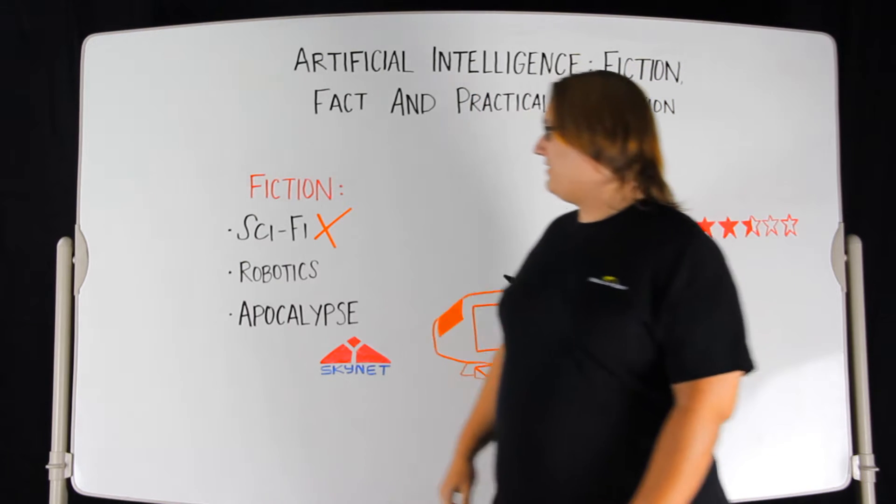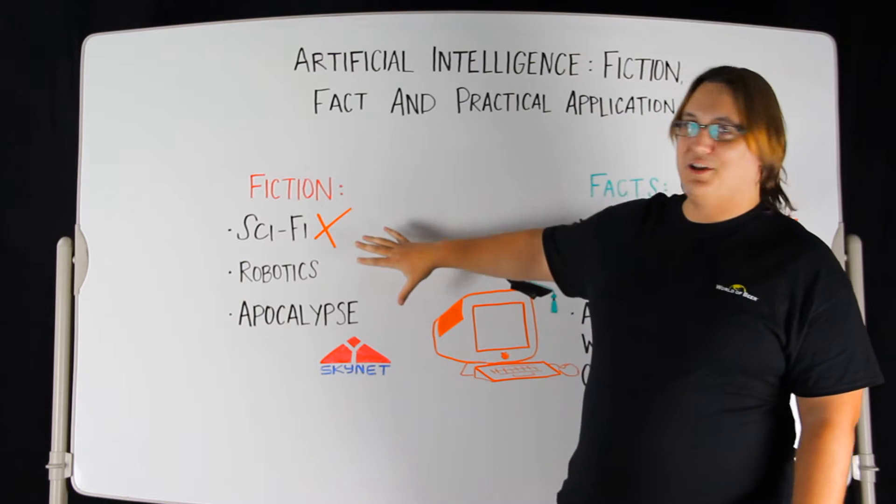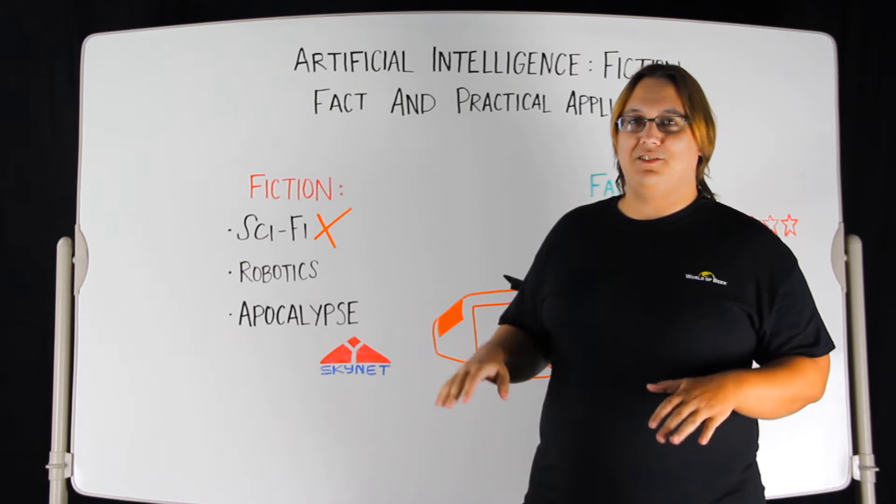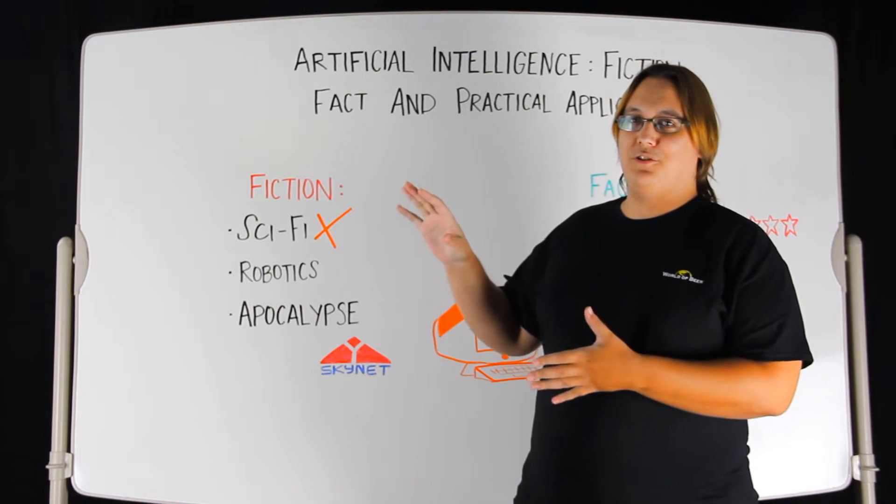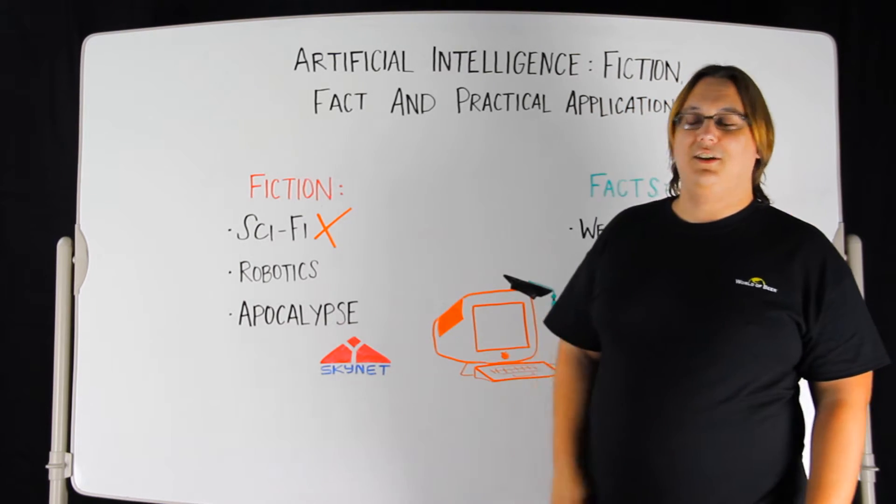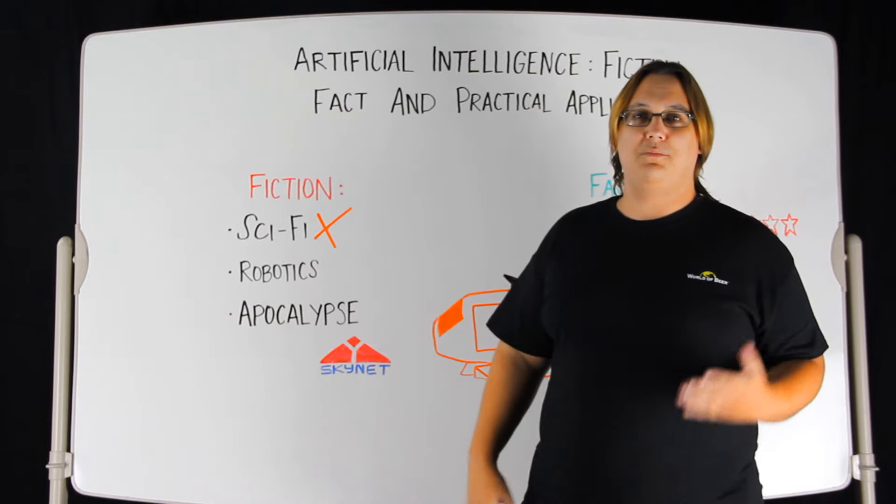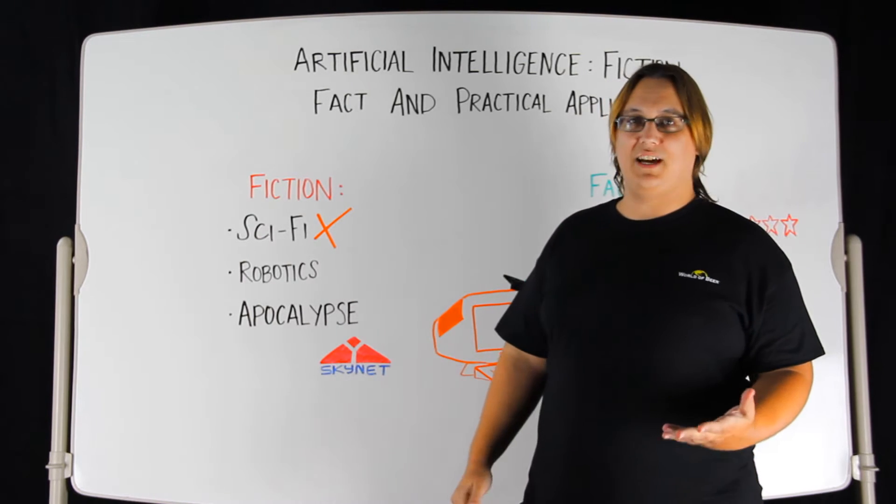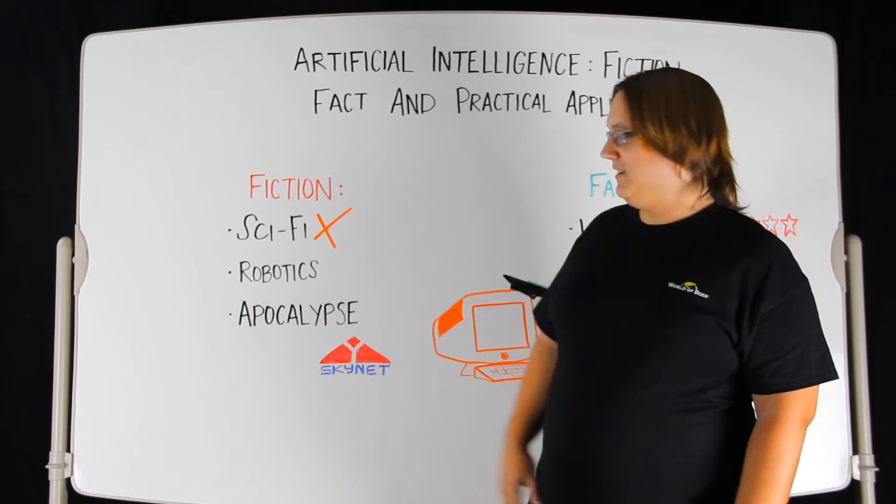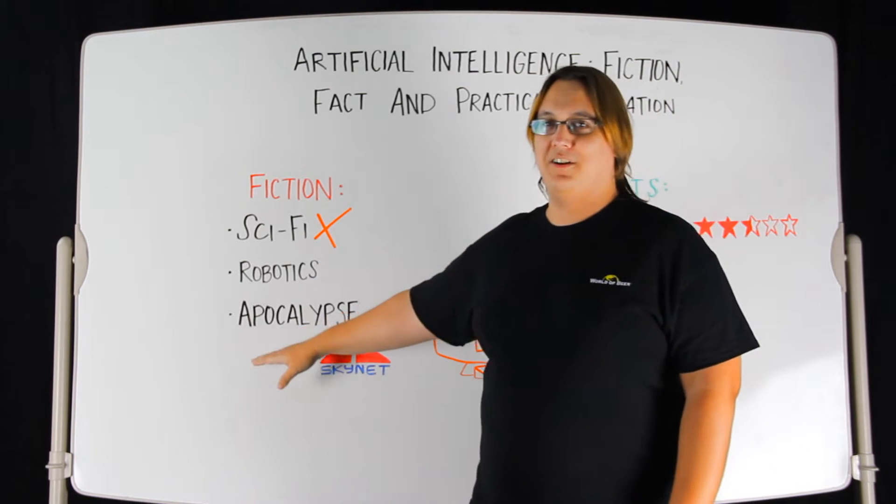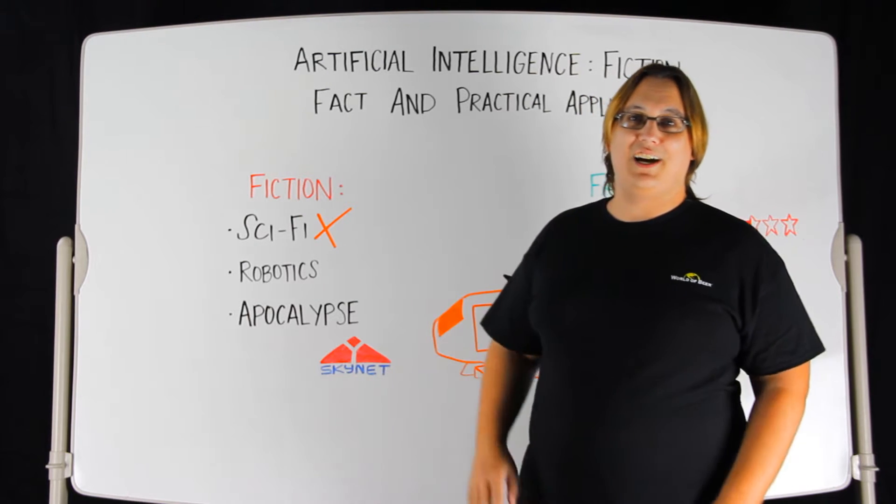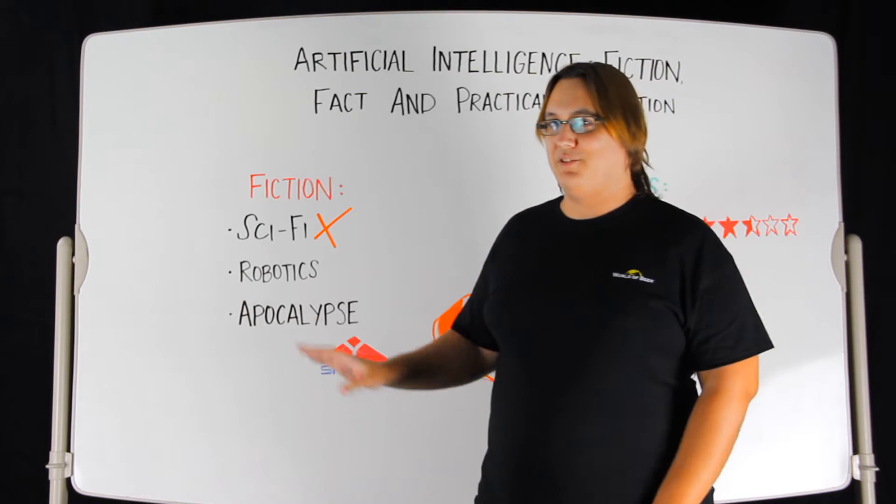So let's just dive right in. First off, let's get some things out of the way. Fiction: a lot of people think of artificial intelligence, they think of their sci-fi movies, far-flung future, year 3000 stuff—not even close. You think robotics, something out of Moon or Space Odyssey—not even close. And then there's the ever-popular 'AI is gonna kill everybody.' We can thank Arnold for that one. Also not gonna happen. Total fiction.